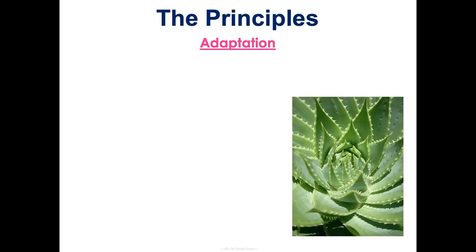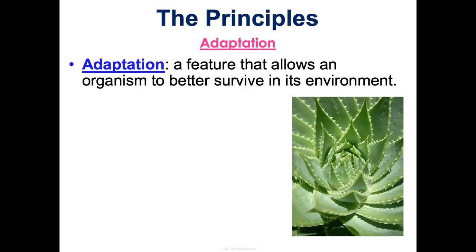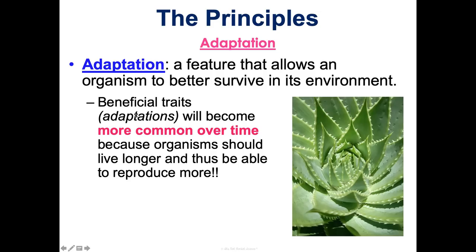The next principle of natural selection is adaptation. An adaptation is a thing — it's a noun. It's a feature or trait that allows an organism to better survive in its environment. It's not a verb — it's something you already have because it was in your genes, and it happens to make you better at surviving than others, making you more fit for your environment. Beneficial traits or adaptations should become more common over time because organisms live longer and reproduce more with those traits.